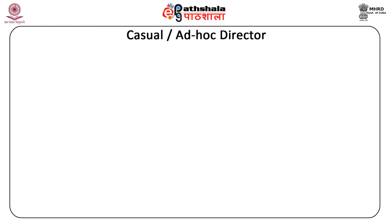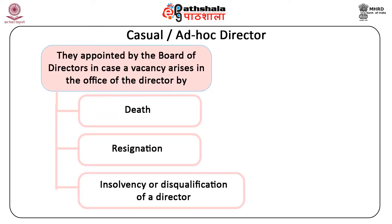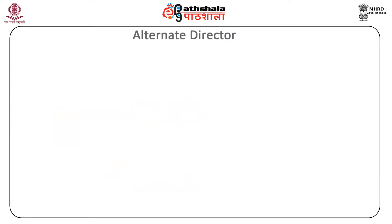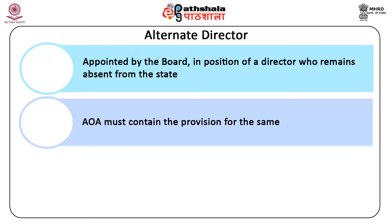Casual or ad hoc directors are appointed by the board of directors in case a vacancy arises in the office of the director due to death, resignation, insolvency, or the disqualification of a director. Such a director will hold office till the term of the original director. An alternate director is appointed by the board in place of a director who remains absent from the state in which meetings of the board are ordinarily held for a period of more than three months. The articles of association must contain the provision for the same.